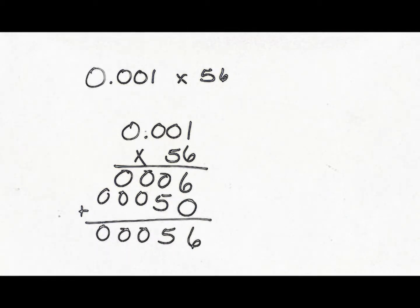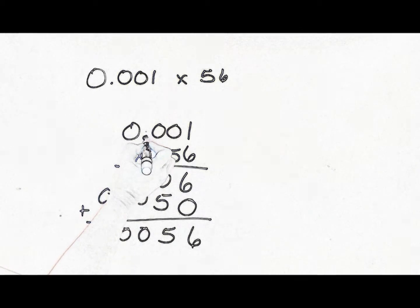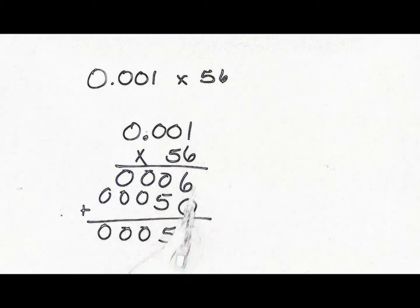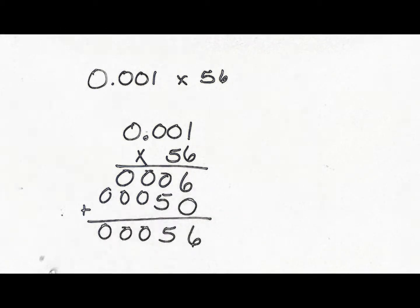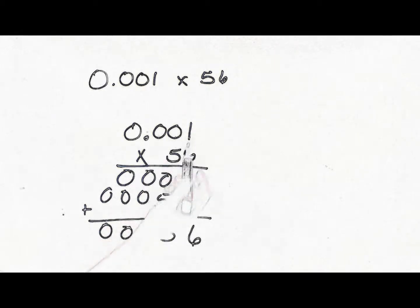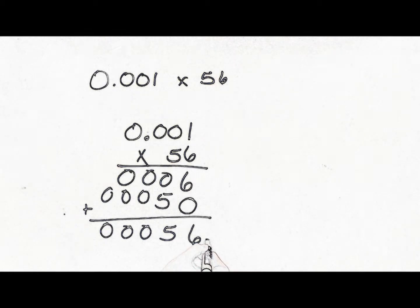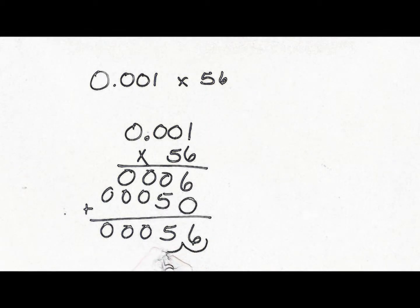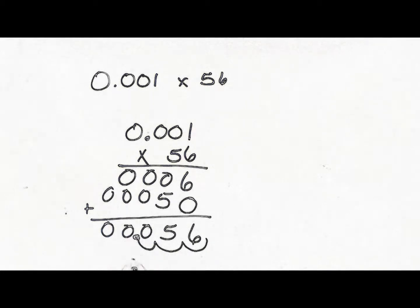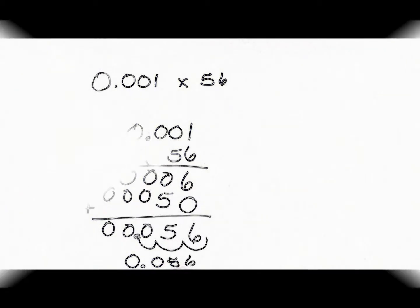Now, how do we know where to place our decimal? We have to remember the rule. You look at your decimal and count the digits to the right of the decimal. There's one, two, three. This number doesn't have a decimal. So, we are just going to focus on the one that does. So, three digits to the right. So, we're going to start making three hops for the three digits and place our decimal there. So, the answer is 0.056.